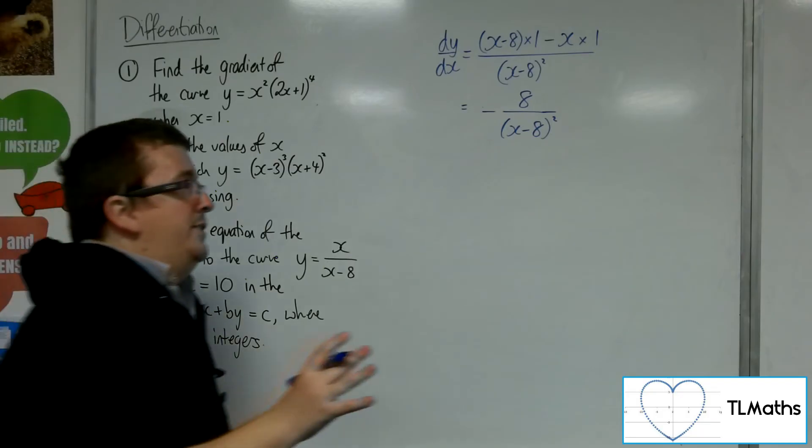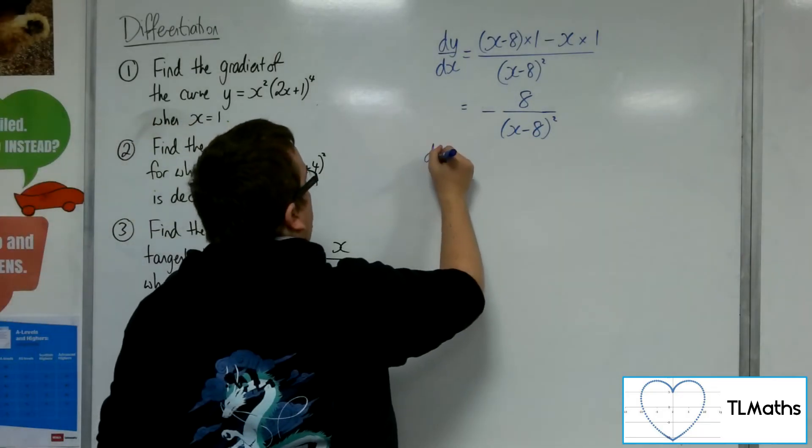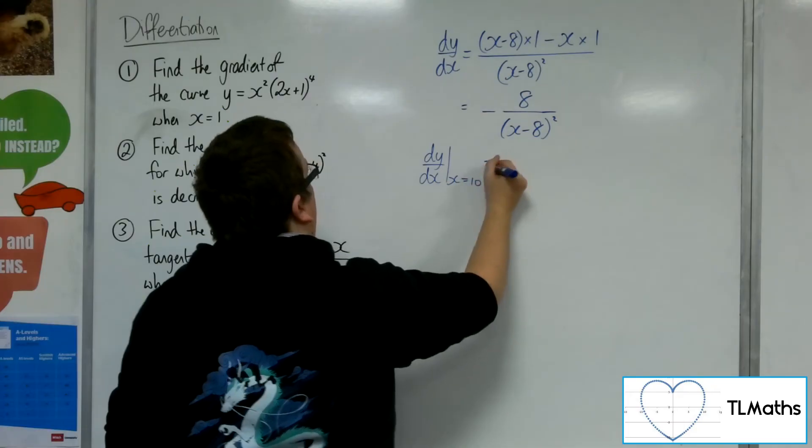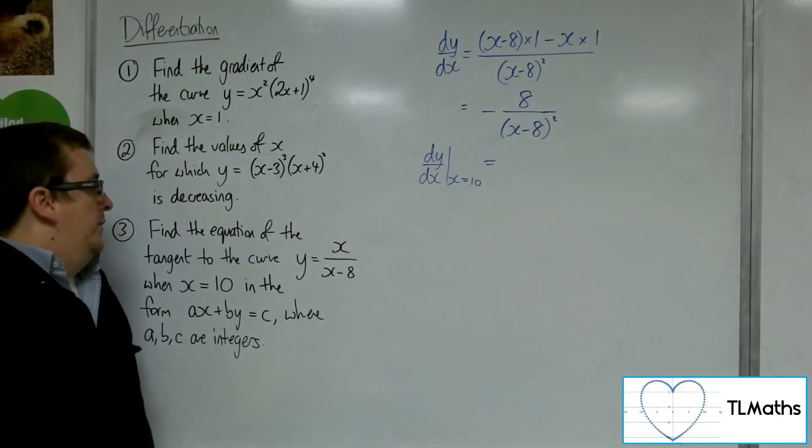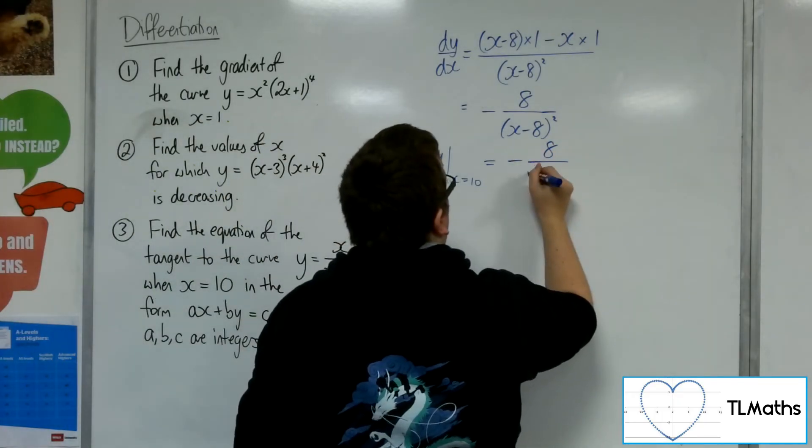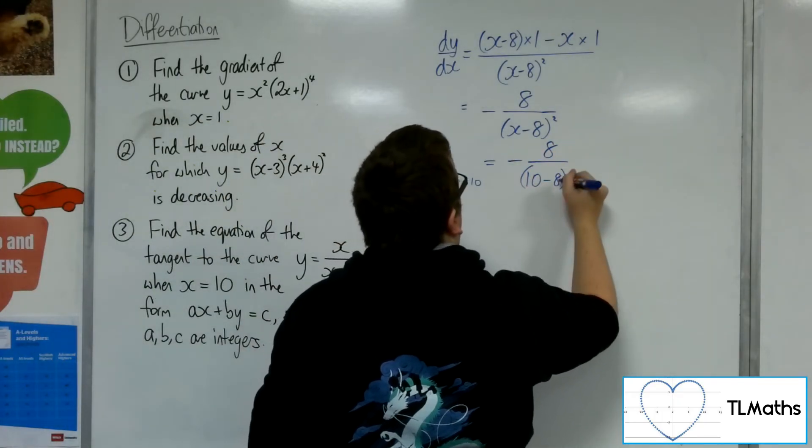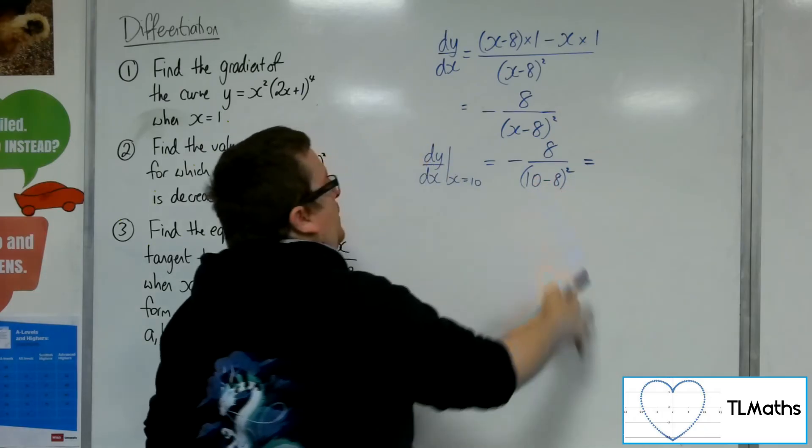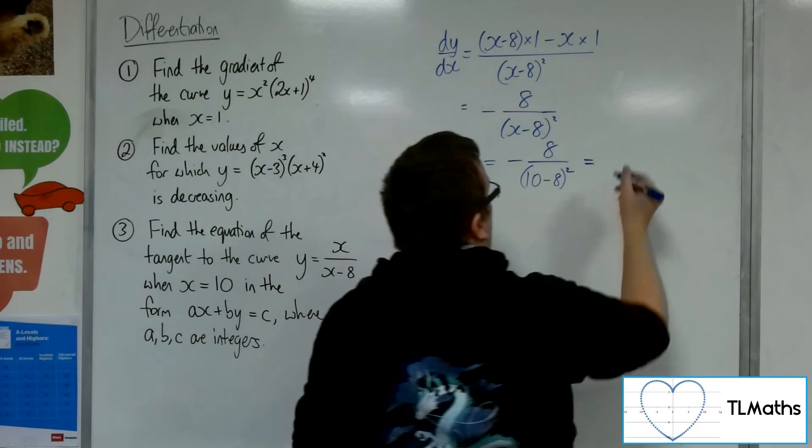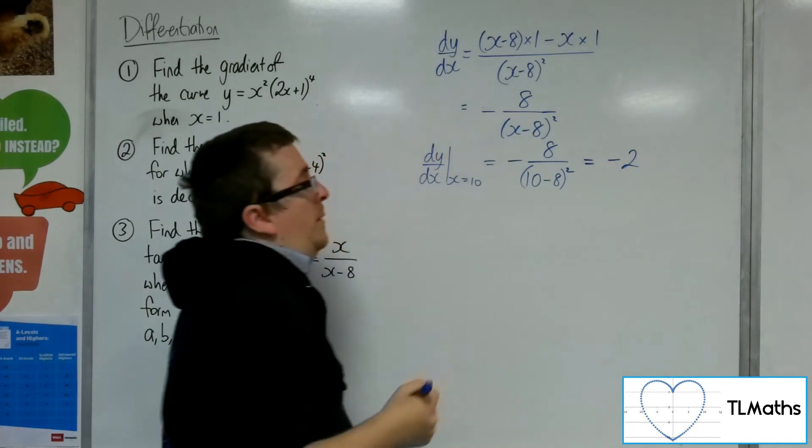So I need to find the gradient of the tangent. So I need to substitute in the x equals 10 into the first derivative to work out the gradient. So that would be minus 8 over 10, take away 8 squared. Now 10, take away 8 is 2. 2 squared is 4. 8 divided by 4 is 2. So the gradient is minus 2.